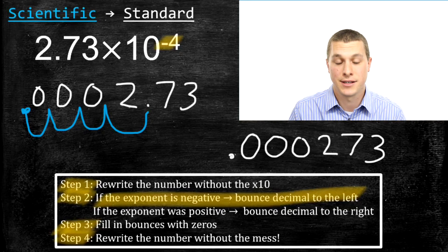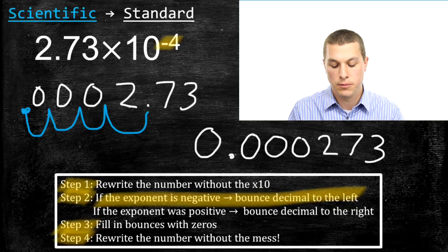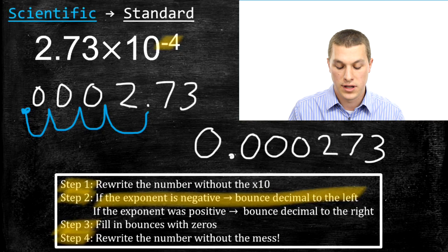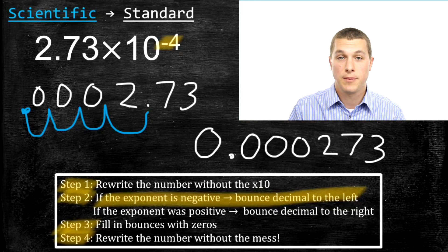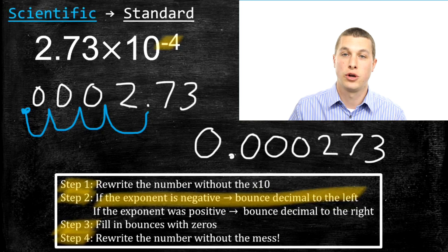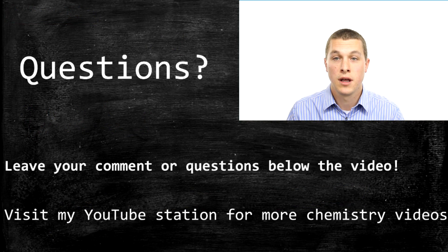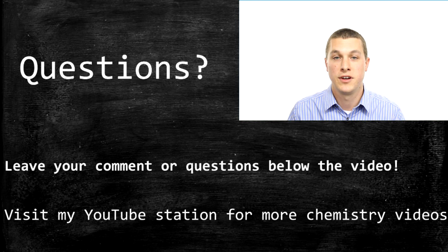It's customary to add an extra zero in front of that decimal — it doesn't change the number, but it helps make clear that the dot is a decimal point, so the number is 0.000273. That's it. We've talked about how to go from scientific notation to standard notation, and also how to go from standard notation to scientific notation. Thanks for watching — please leave any comments or questions below, and check out my YouTube channel for more chemistry videos.